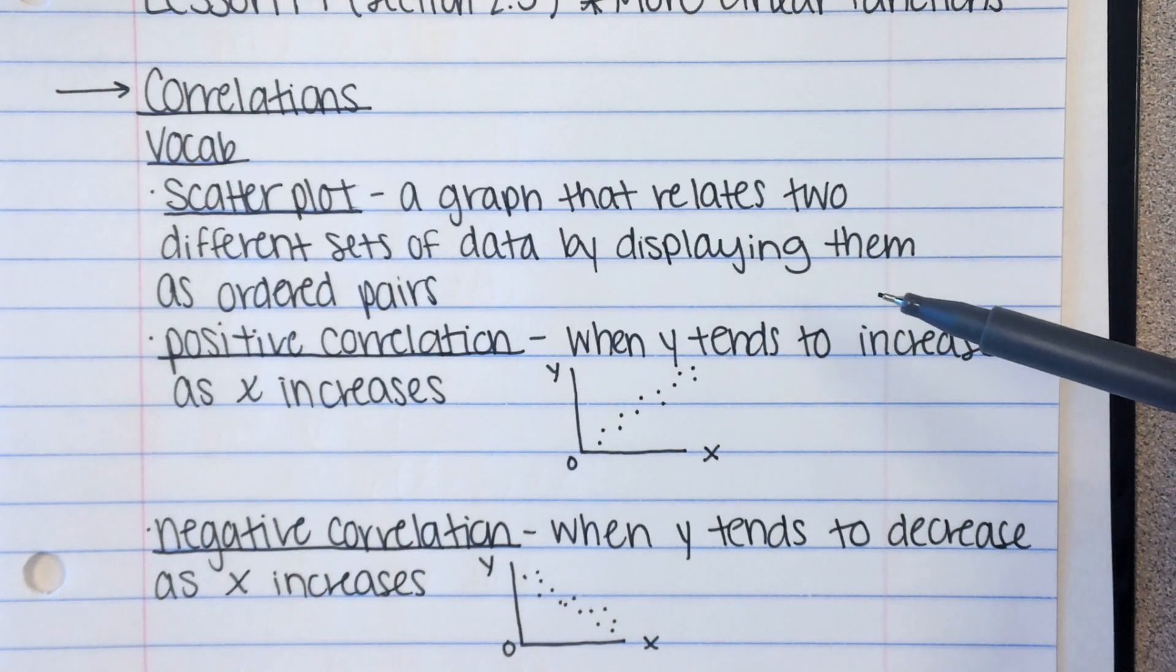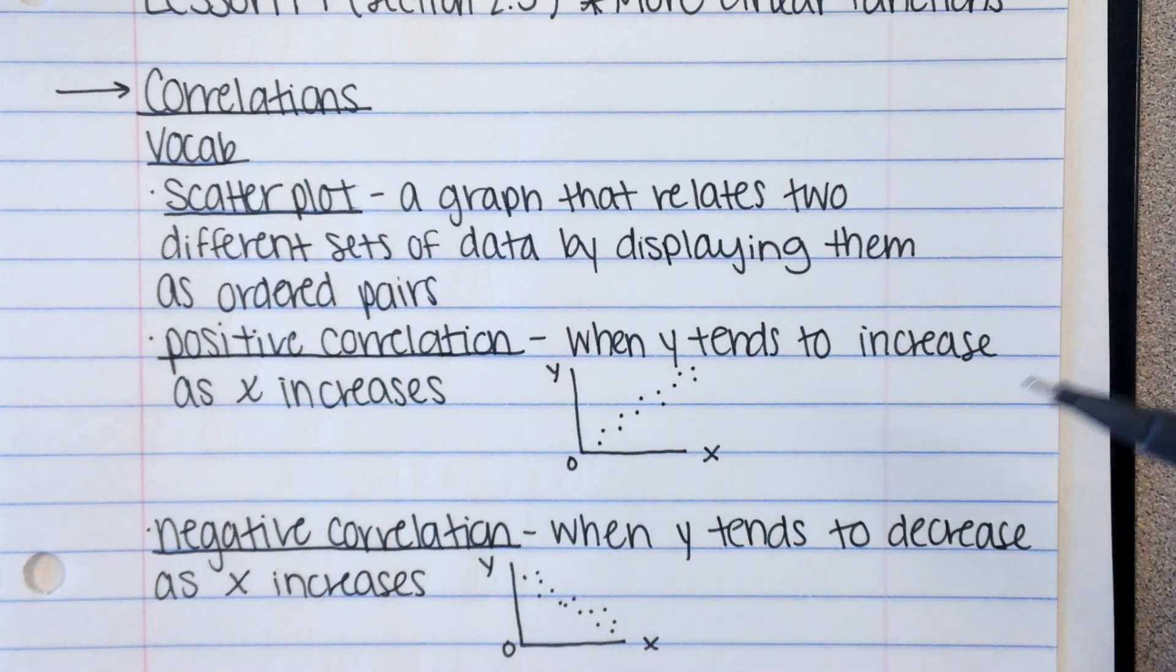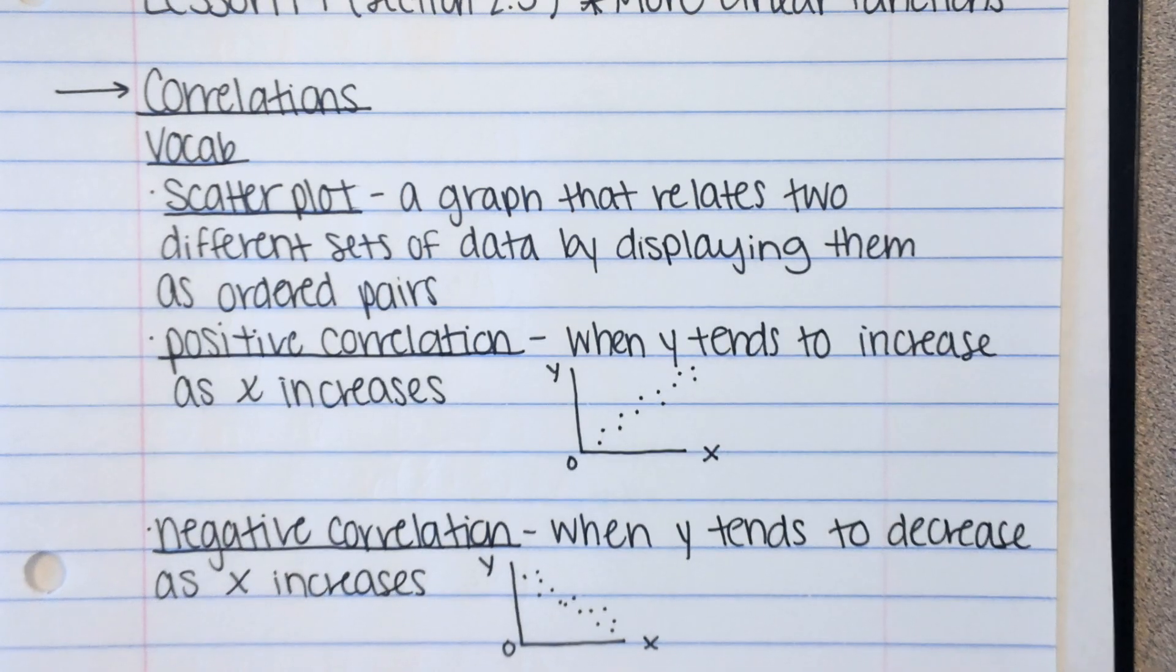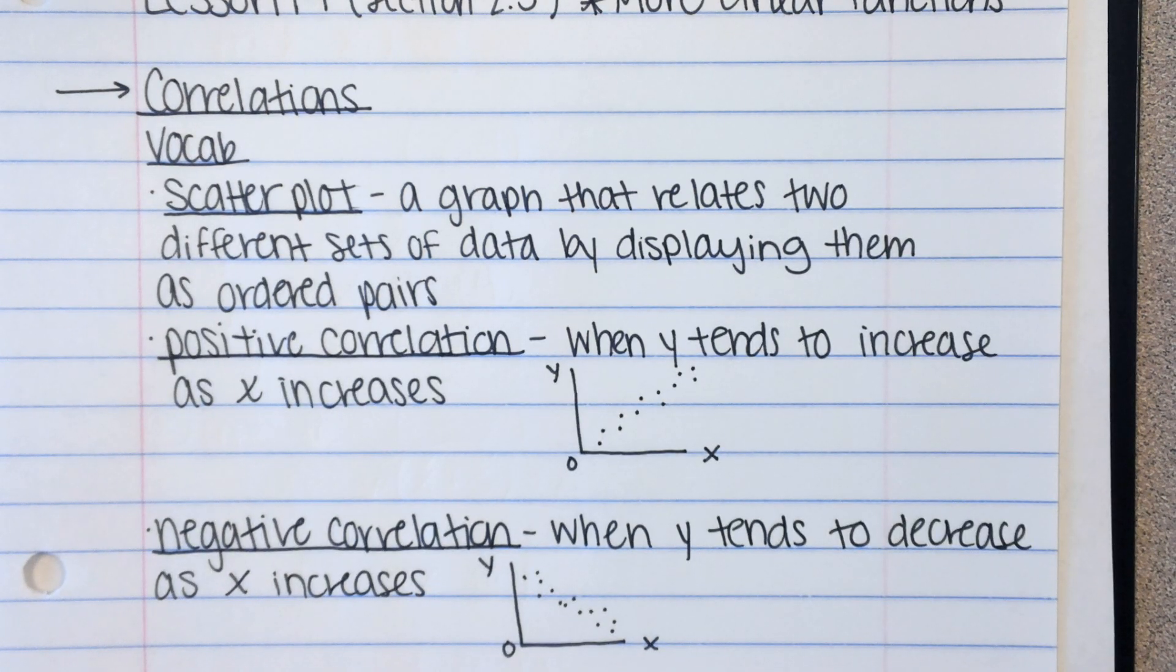So first we have scatterplot. A scatterplot is a graph that relates two different sets of data by displaying them as ordered pairs. So you're given two different sets of data, you turn one into X, one into Y, you plot those on a graph. You guys have worked with scatterplots before. You've graphed them, you've looked at them, you've analyzed them.